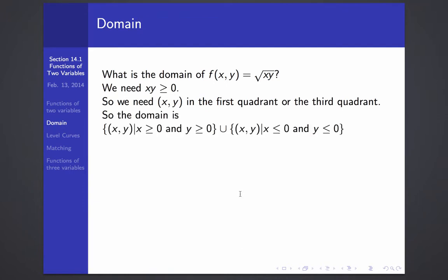So we need the points x, y to be in the first quadrant or the third quadrant. It can also be written as the set of x's and y's such that x is greater than or equal to zero and y is greater than or equal to zero, together with the set of points x, y, such that x and y are both less than or equal to zero. And this is what the domain looks like.